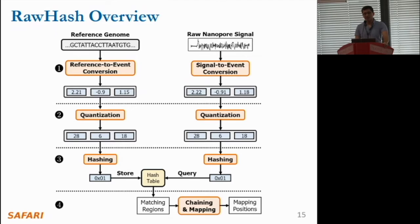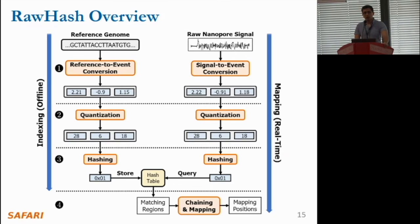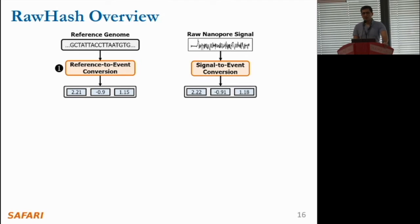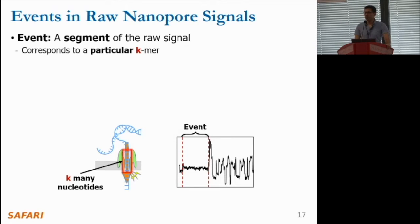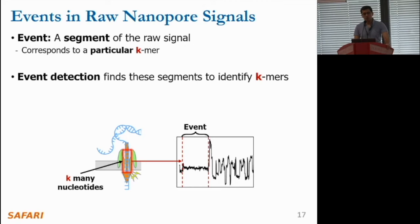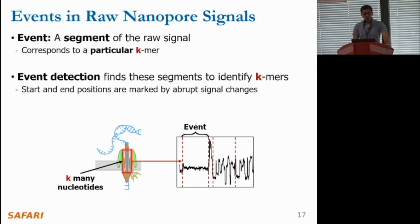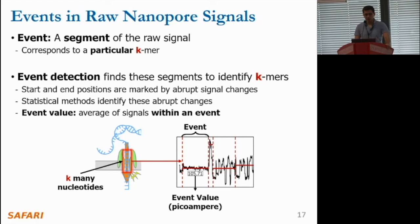The left side of this figure refers to our offline indexing step for reference genomes, and on the right side we show the steps taken when mapping raw nanopore signals in real time. Starting from the first step: in nanopore sequencing, an event is a specific segment of the signal that corresponds to a particular k-mer or sequence of k-nucleotides. Event detection is the process of identifying these segments generated by sequencing a particular k-mer, and the start and end positions are usually marked by abrupt changes in the signal. Statistical methods are typically used to identify these abrupt changes.